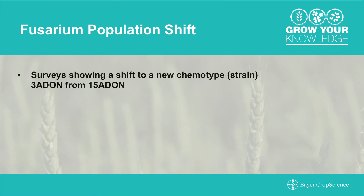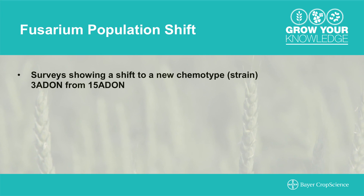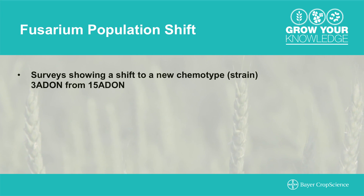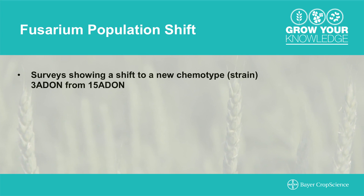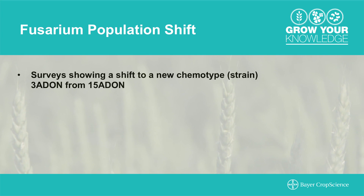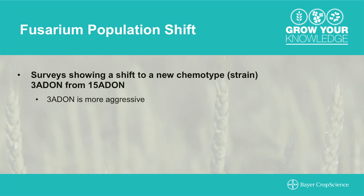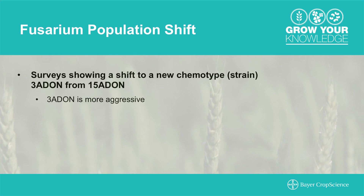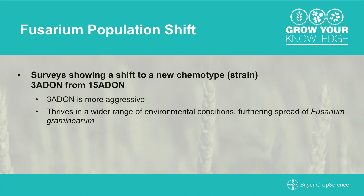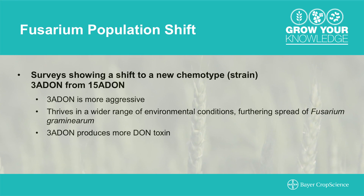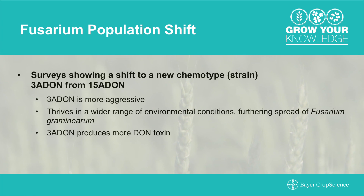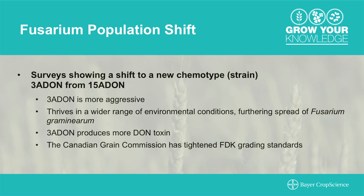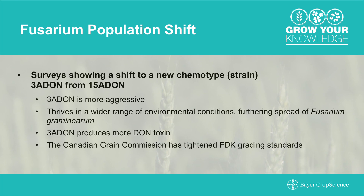Surveys have indicated that there's a shift in the Fusarium graminearum population to a new chemotype or strain — 3ADON moving from 15ADON. With 3ADON, it's a much more potent DON producer. In studies, it's been shown that it produces two times the amount of DON than 15ADON. This has a big impact on our grading system. As of 2010, the Canadian Grain Commission has tightened the Fusarium Damaged Kernels, or FDK, standards in our grading system.